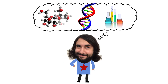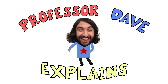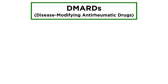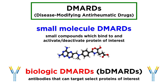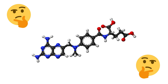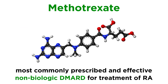Professor Dave Explains. In the previous tutorial we introduced anti-rheumatics as a class of drugs, and outlined the differences between small molecule and biologic DMARDs. Now let's look at a specific small molecule, or non-biologic DMARD, so we can better understand the pathway by which these drugs elicit their effects. For decades, methotrexate has been the most commonly prescribed and effective non-biologic DMARD in the treatment of rheumatoid arthritis, or RA.